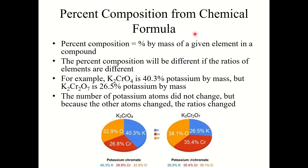Let's first talk about percent composition from a chemical formula. Percent composition essentially means the percent by mass of a given element in a compound. The percent composition will differ if the ratios of the elements are different. For example, K2CrO4 (potassium chromate) is approximately 40.3% potassium by mass. However, K2Cr2O7 (potassium dichromate) is 26.5% potassium by mass. The number of potassium atoms did not change, but because the other atoms changed, the ratios changed. Thus the percent by mass of potassium decreases from potassium chromate to potassium dichromate — we have more chromium and more oxygen, so the percent of potassium decreases.